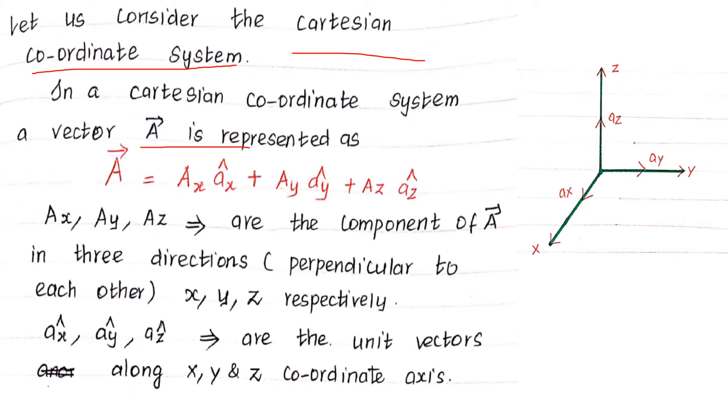And how we can represent A? A is equal to, normally, any vector A can be represented by, for single axis means, we have to multiply the scalar with unit vector, the corresponding unit vector. But here, we are having three axes. How to represent A, A is the summation of all the components in three axes. The first axis, A_x into a_x unit vector, A_y into a_y next unit vector, A_z into a_z unit vector. Here, what is A_x, A_y and A_z? These all are the component of A vector. In three directions, like X, Y, Z respectively.